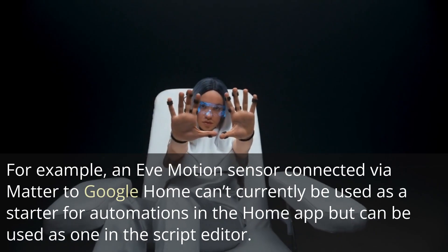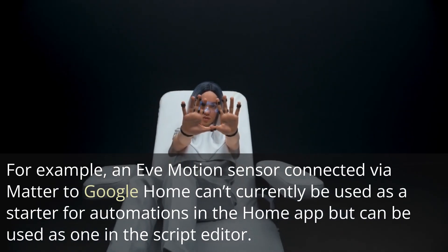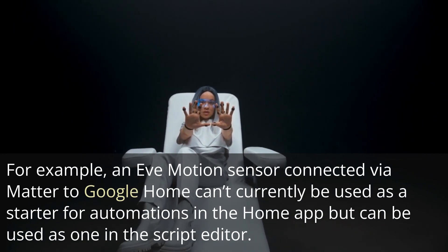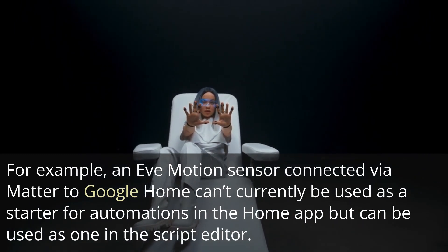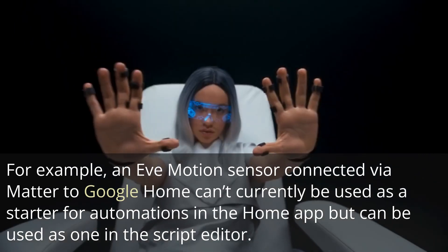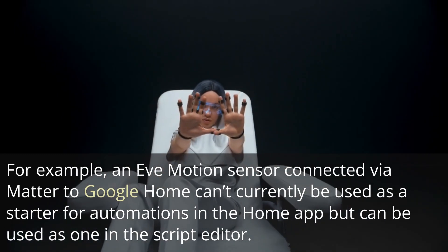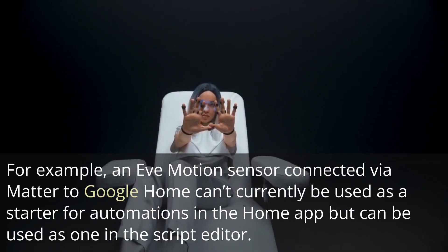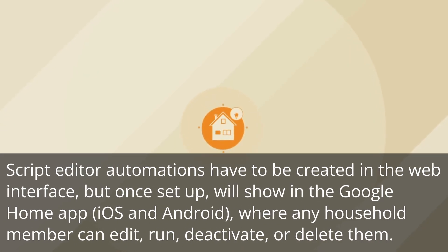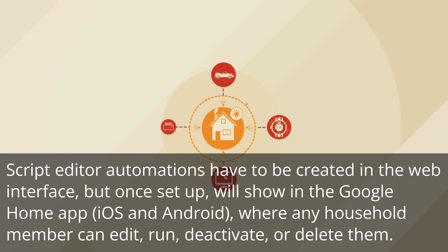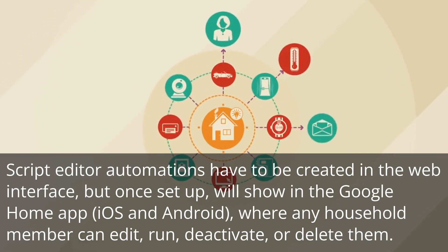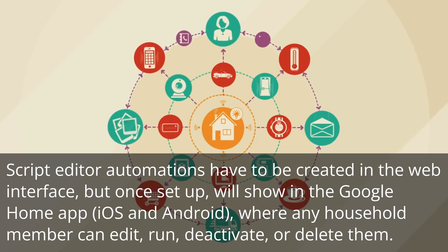For example, an Eve motion sensor connected via Matter to Google Home can't currently be used as a starter for automations in the Home app, but can be used as one in the Script Editor. Script Editor automations have to be created in the web interface, but once set up, will show in the Google Home app on iOS and Android, where any household member can edit, run, deactivate, or delete them.